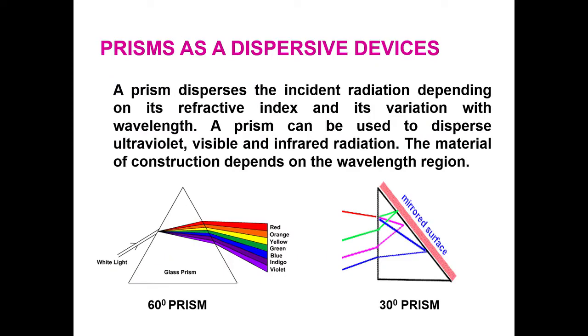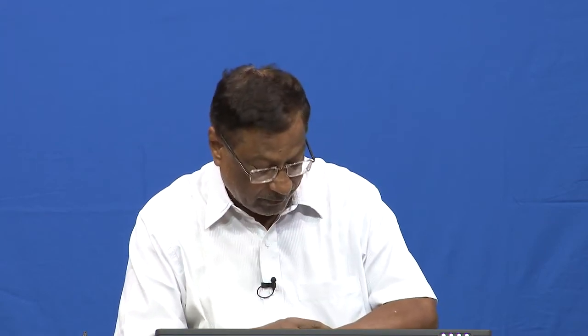Next I want to discuss prisms as dispersing devices. We all know the rainbow colors, and from high school we have seen that even small water droplets falling from the sky can act as prisms — as dispersing agents for sunlight — giving us rainbow colors. A prism disperses the incident radiation; that is the job of prisms. I have shown you a picture of a 3D prism here.